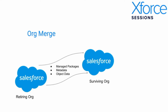We recently worked with a customer who had separate orgs for its international and domestic U.S. business units, and they were working towards a migration to Lightning under a new combined global org to move closer to that single source of truth and a unified operating model between both of these business units. The result was two complex org structures and schemas with a great need of transformation to bring those schemas into alignment and successfully complete that merge.